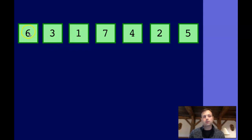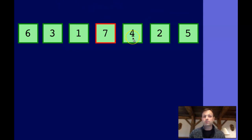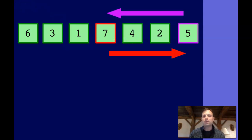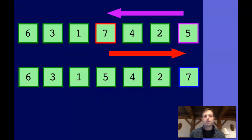The six starts out as the max, checks with the three — still six is the largest — checks with the one, six is larger, checks with seven, and seven's larger. Now seven is the new max. We check seven against four, two, and five, and we see that seven is the max. Once we've selected that largest item, the selection sort algorithm then takes the step to swap that with the last item in the list. In this case, the last item is the five. We're going to swap the seven and the five, putting the seven at the end and putting the five where the seven once was.